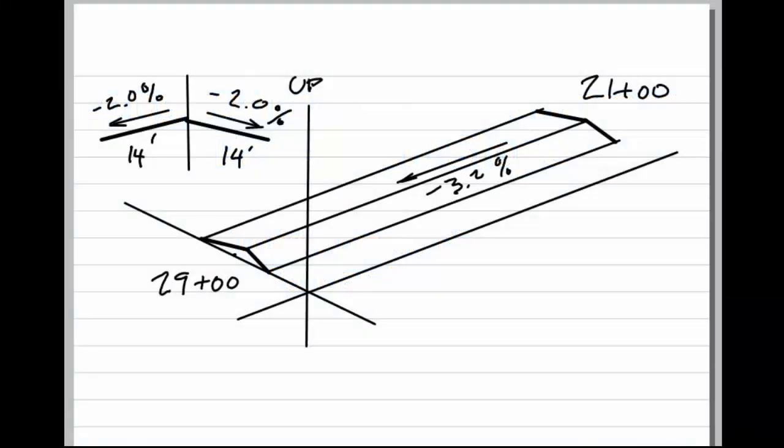Let's work out a problem regarding longitudinal and transverse slopes on a roadway. Here in this situation we have a two-lane road that is 28 feet wide. Here you can see a cross section.